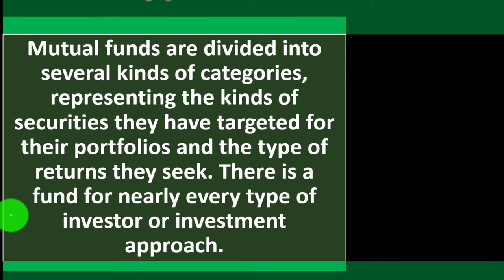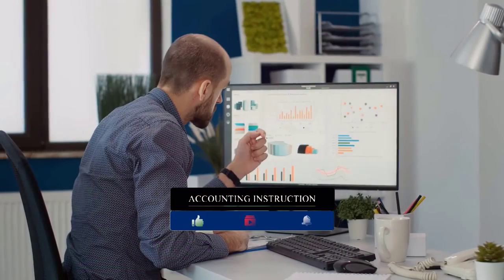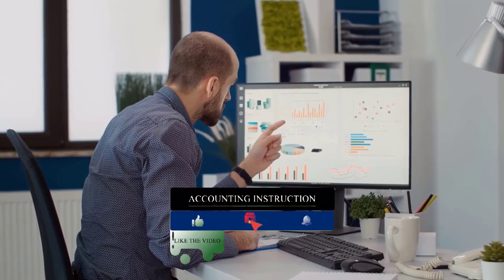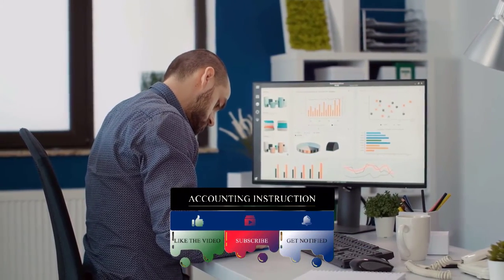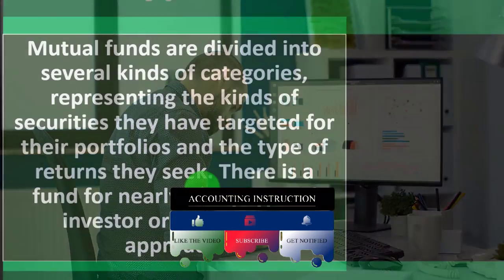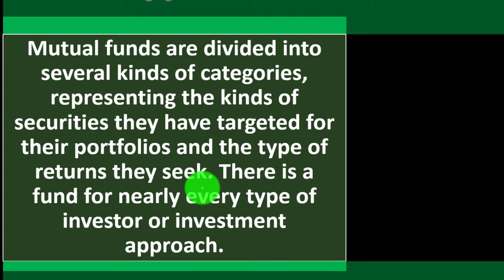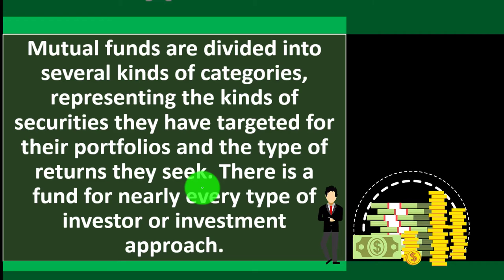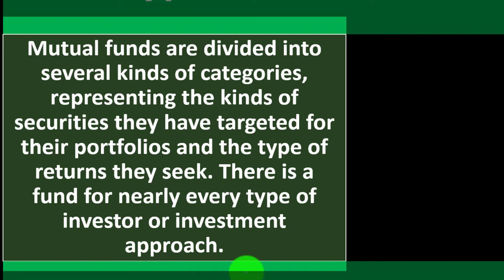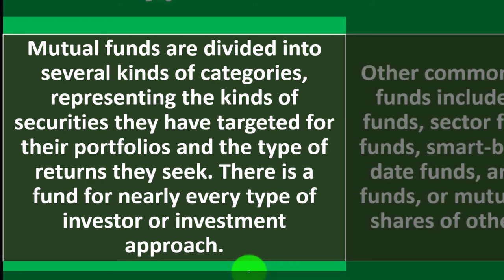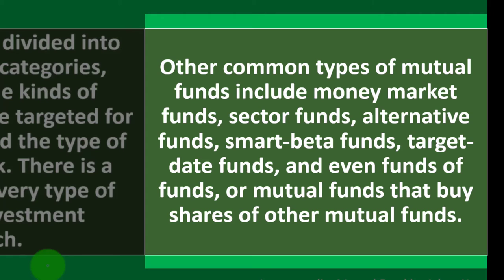Mutual funds are divided into several kinds of categories representing the kinds of securities they have targeted for their portfolios and the type of returns they seek. Now we need to think: what are my investment goals and strategies, and what kind of mutual funds can I invest in to meet those goals? There's a whole array of mutual funds — we want to consider how much leeway the fund managers have, whether we want less-managed funds, and the costs involved. Other common types of mutual funds include money market funds, sector funds, alternative funds, smart beta funds, target date funds, and even funds of funds — mutual funds that buy shares of other mutual funds.